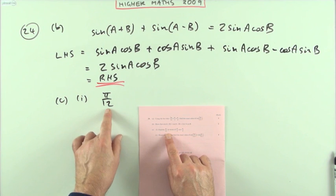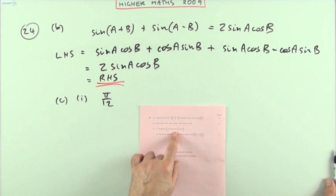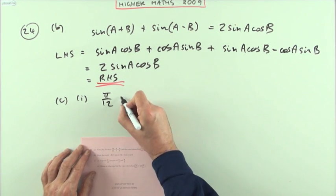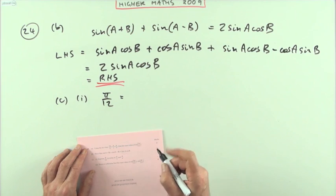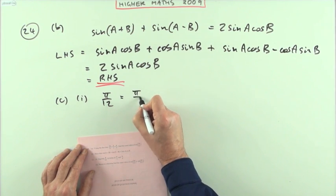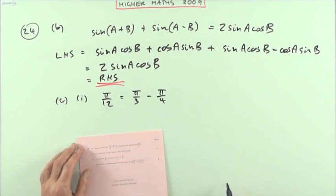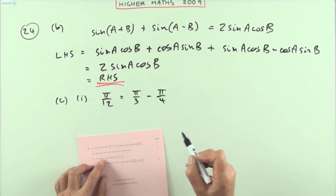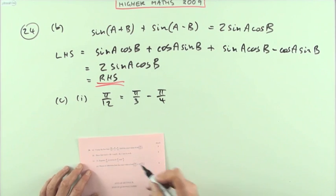Part C(i): Express π/12 in terms of π/3 and π/4. That's like saying express a 12th in terms of thirds and quarters. Well that would be a third take away a quarter, a third being bigger. So that's just going to be π/3 minus π/4. One third minus one quarter being four twelfths minus three twelfths is one twelfth. That's the first part.